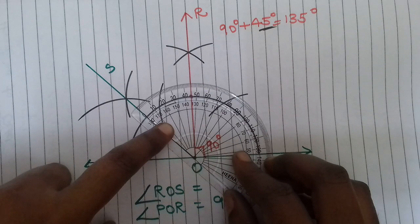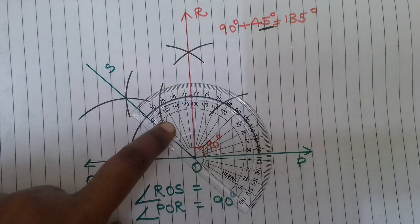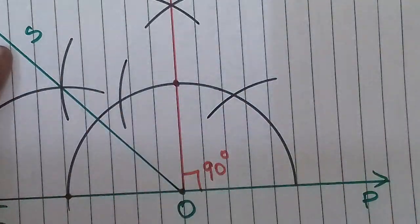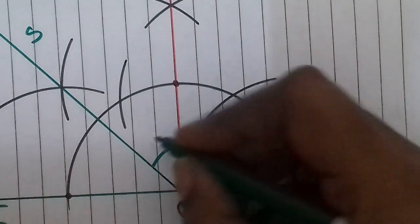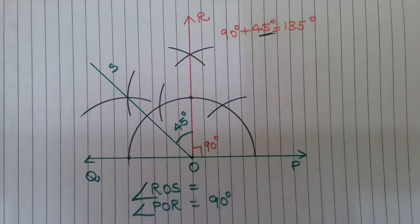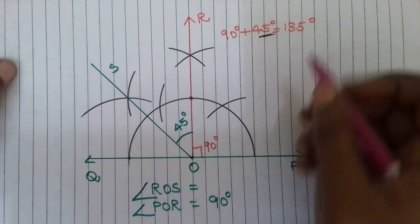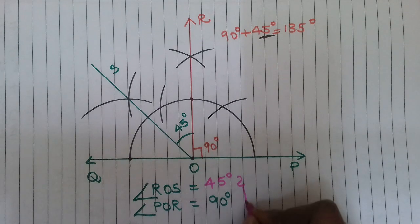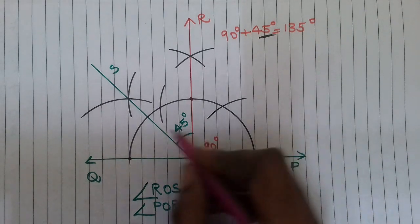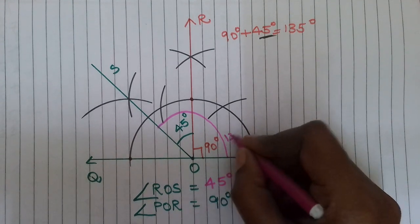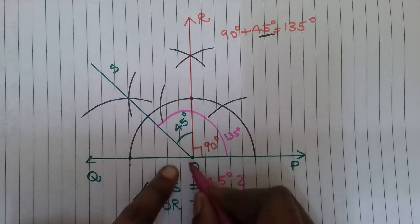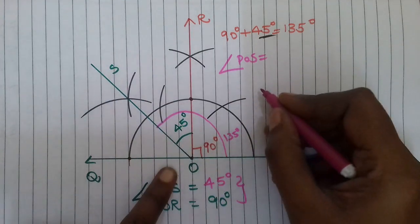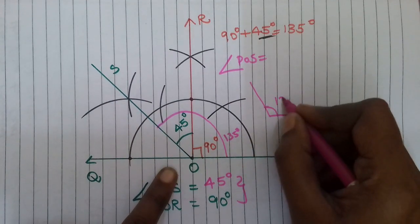You will get 45 degrees. Exactly, 45 degrees. So 90 plus 45 degrees equals 135 degrees. This angle ROS is 45 degrees. If you combine and add them, angle POS equals 90 plus 45, which is a full 135 degrees. This angle POS is 135 degrees.